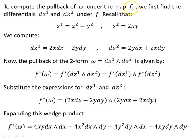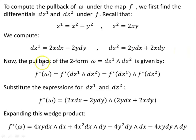To compute the pullback of omega under the map F, we first find the differentials dZ1 and dZ2 under F. Recalling Z1 = x²−y² and Z2 = 2xy, we compute: dZ1 = 2x dx − 2y dy, and dZ2 = 2y dx + 2x dy.